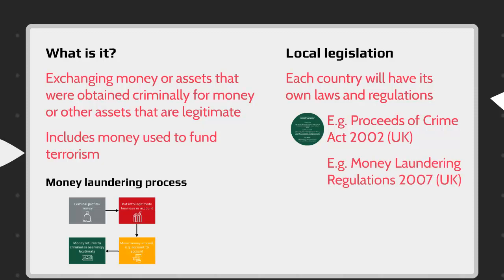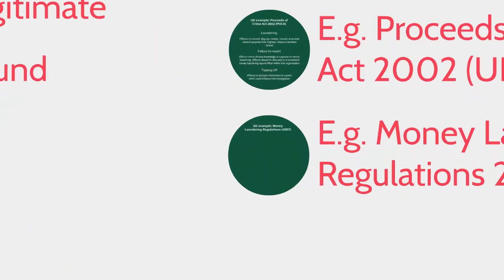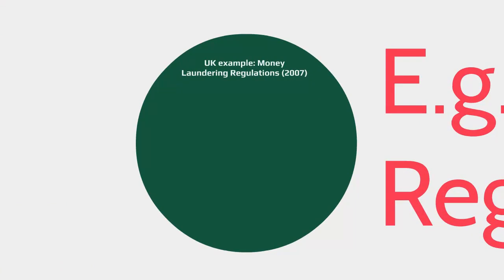We're also looking at the Money Laundering Regulations of 2007. These regulations apply to various business sectors: financial and credit businesses, accountants, and estate agents. The obligations require professionals in these industries to report money laundering to the authorities, ensure systems are in place so staff are trained to recognise signs of money laundering, and to keep records.